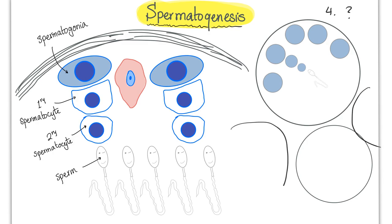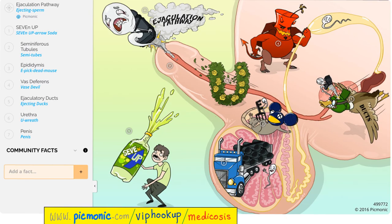Spermatogenesis is a process that's very sensitive to heat. And that's why the testicles are hanging outside of the male's body, or are they hanging outside to be away from the core body so that their temperature may cool down. And that's why you better not wear tight boxers or tight underwear because they will raise the temperature in your testicles and inhibit the process of spermatogenesis. This picture is from our great sponsor, Picmonic. Go to picmonic.com/viphookup/medicosis.